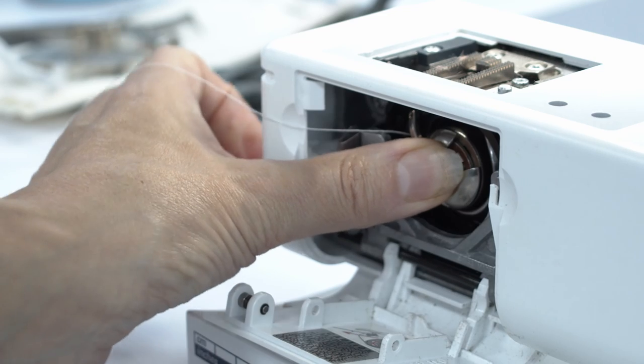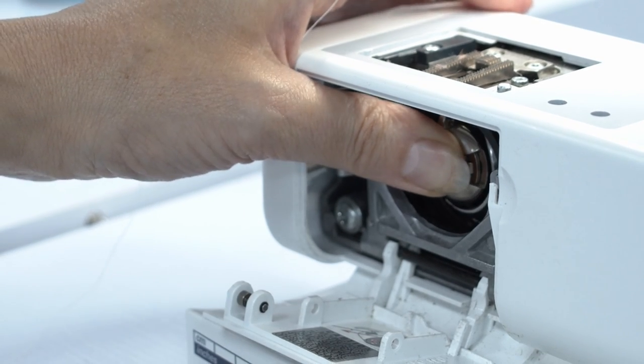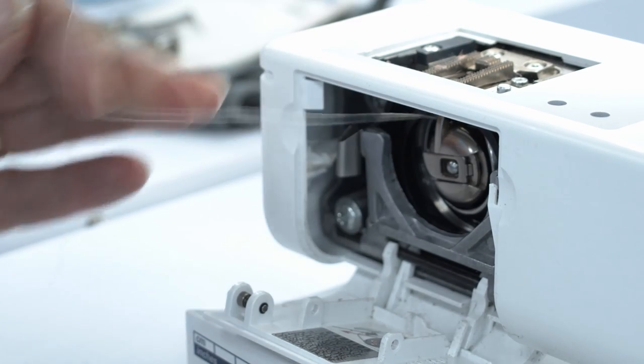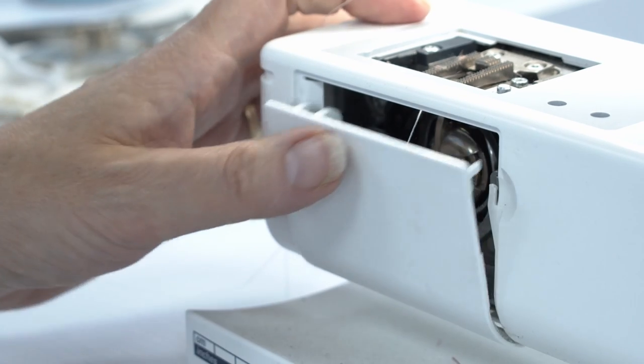I'm going to release, rotate around, and you can hear it click and then click again. Now your bobbin and bobbin case is secure. Just cut off the thread like that, and we're done.